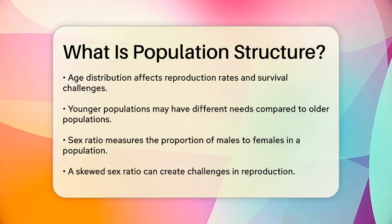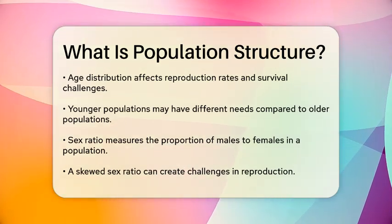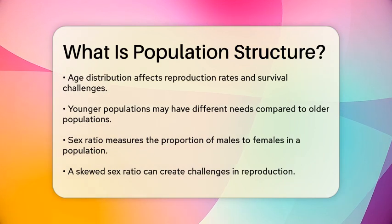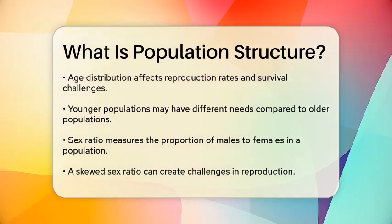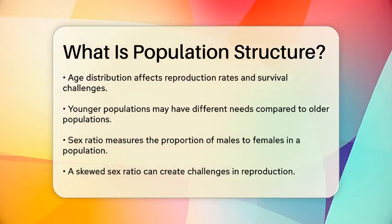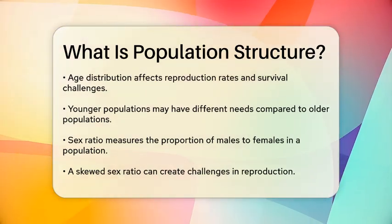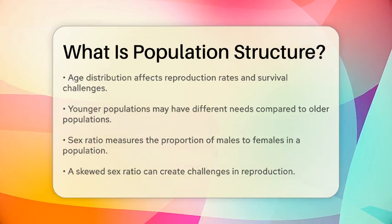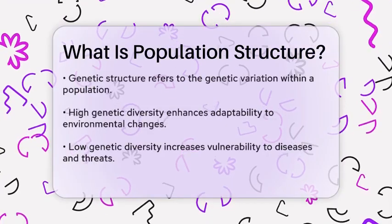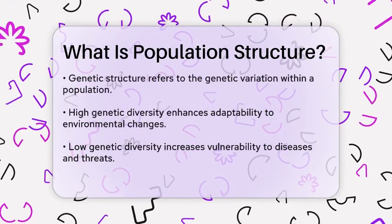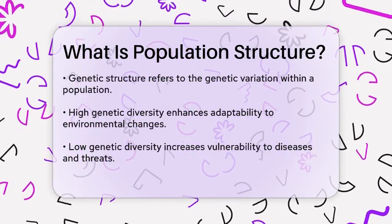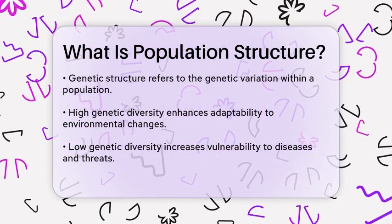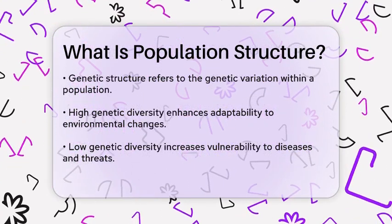Sex ratio, or the proportion of males to females in a population, is another key aspect. This ratio can impact mating patterns and overall population growth. For instance, a skewed sex ratio might lead to challenges in reproduction, affecting the population's sustainability.